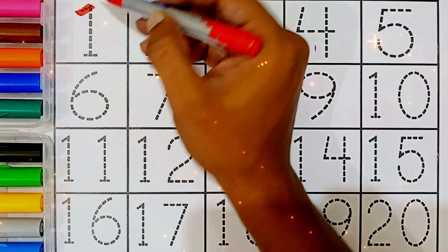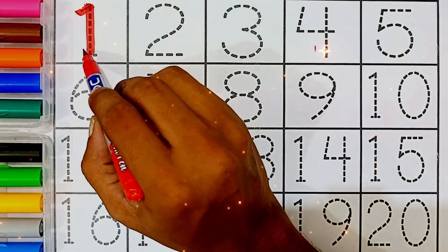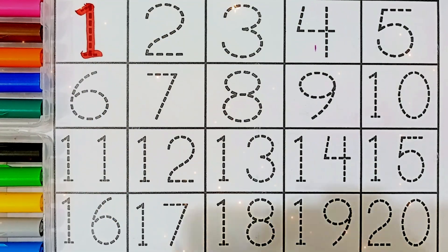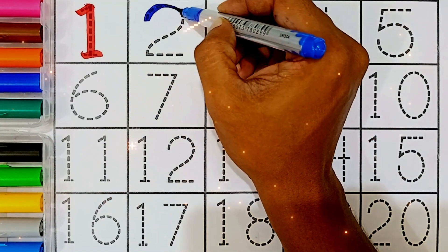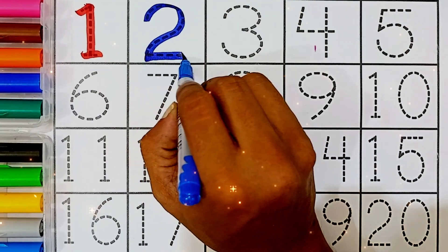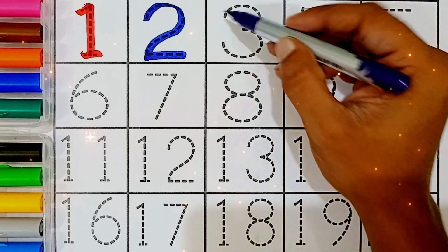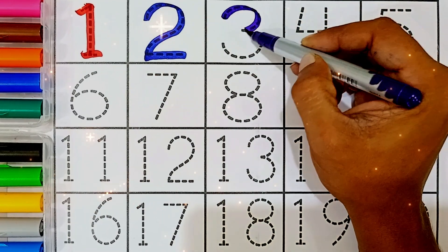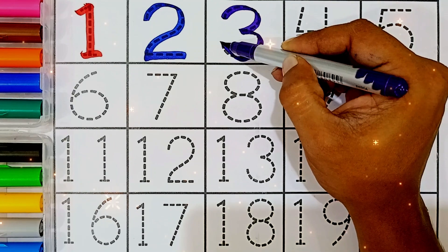One, red color. One. Two, blue color. Two. Three, purple color. Three.